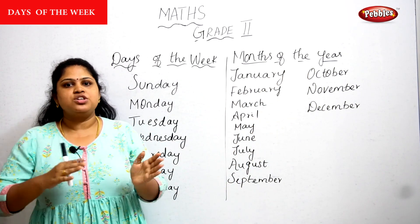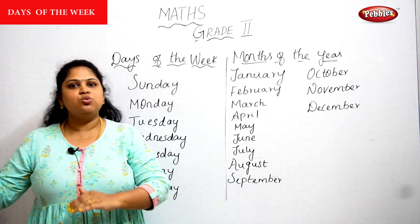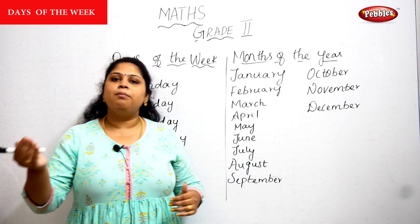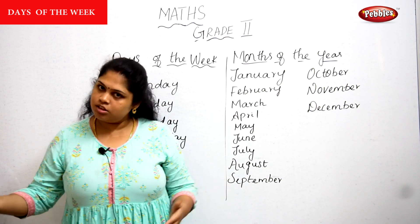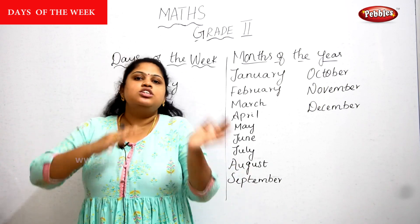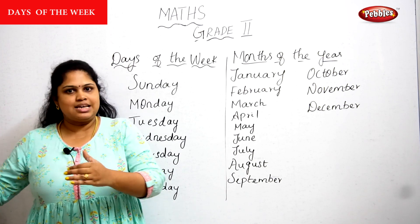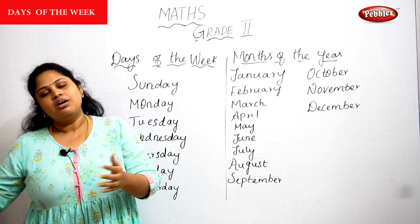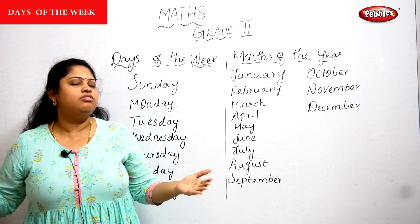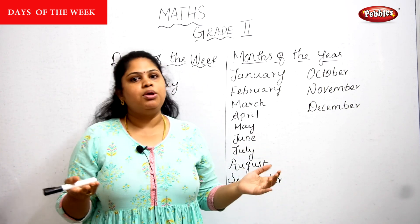Once January finishes, it goes to February, March, April, May, June, July, August, September, October, November, December — and one year is over. Then we move on to the next January, next February — a new year begins and the cycle moves on.